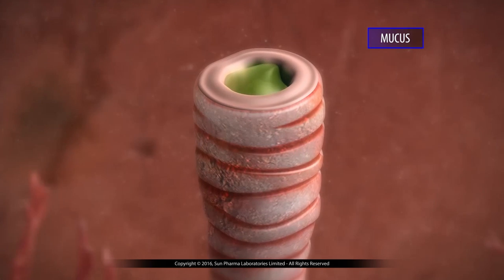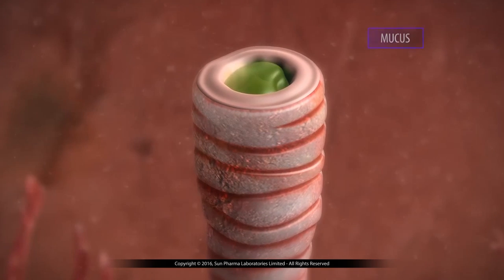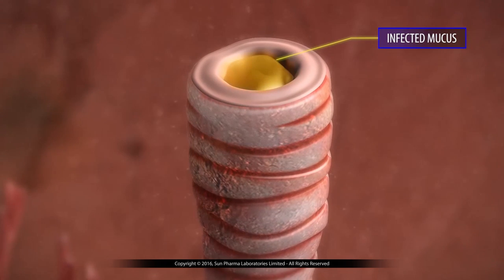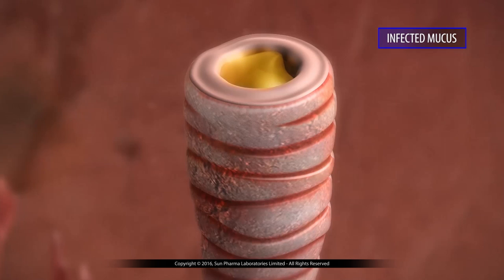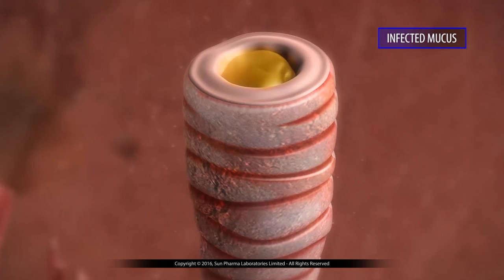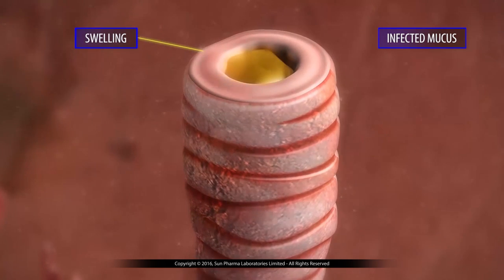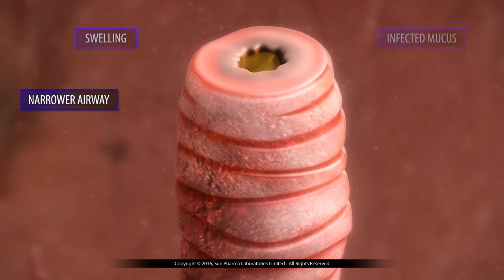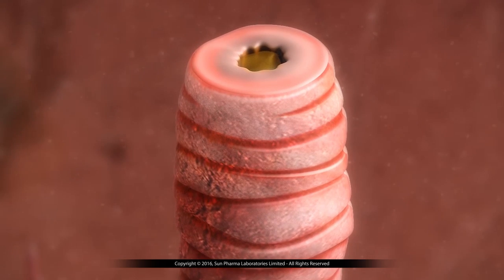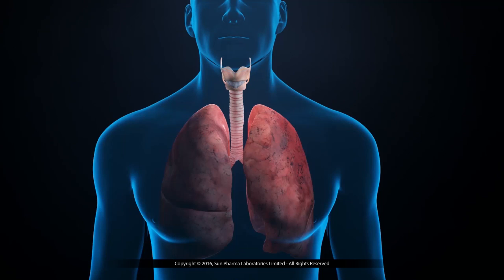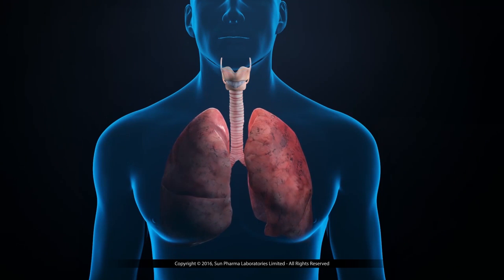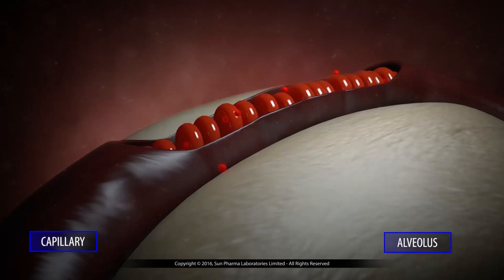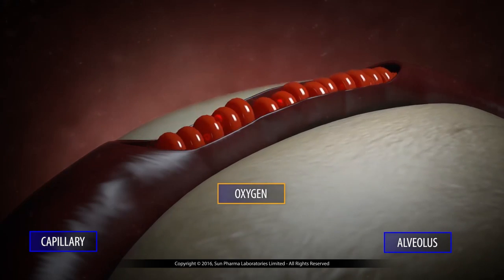The lungs and airways have more mucus which is not cleaned out well, so the mucus stays in the airways, clogs them, and makes you cough. This extra mucus can easily get infected. The airways get irritated and swell, leading to narrowing of the airways and reduced airflow. If you continue to smoke, the airways and air sacs get damaged and less oxygen is carried to your body.